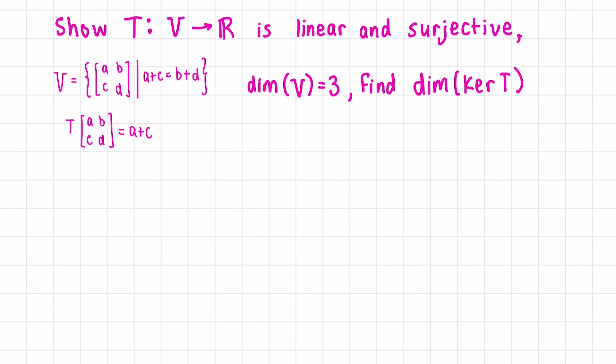To show surjectivity, we need to show that the image of the transformation equals the entire codomain, which in this case is R, the real numbers. When would this be true? In order to get just one number A, we can write this as A, B, 0, 0, where A is any real number. This clearly shows that the image of the transformation spans the entire codomain R.